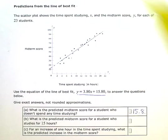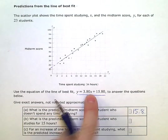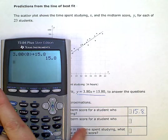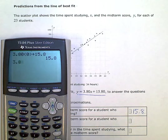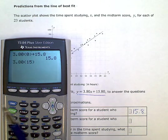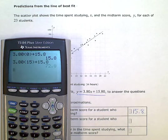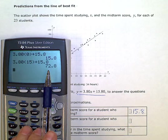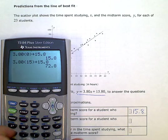But let's go ahead and substitute in 15 for x into our equation here to get an exact answer. So again, 3.80 times, instead of x, we're putting in 15, plus 15.8, and the predicted midterm score would be 72.8.